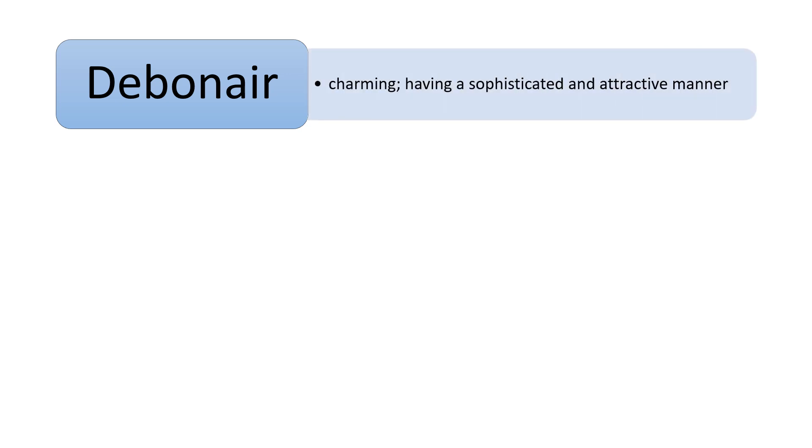The seventh word is debonair. Debonair is an adjective describing someone who is charming, having a sophisticated and attractive manner. Clark Gable, Cary Grant, and David Niven were all debonair men.